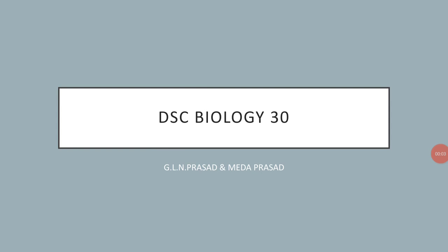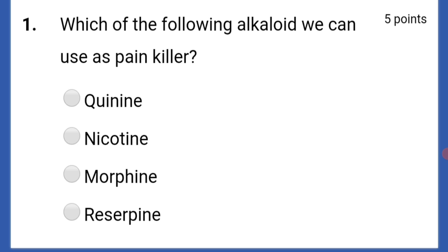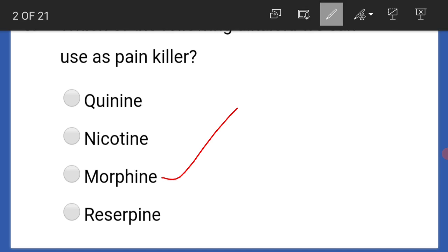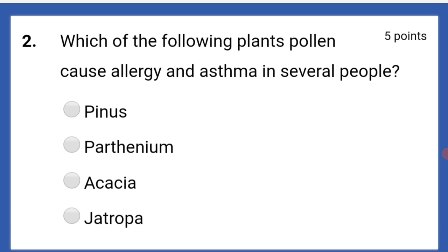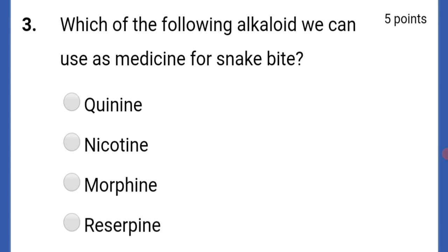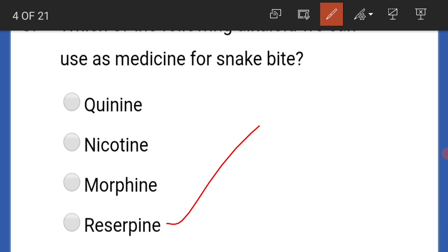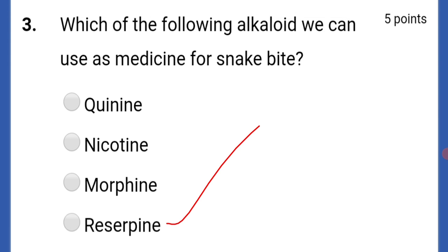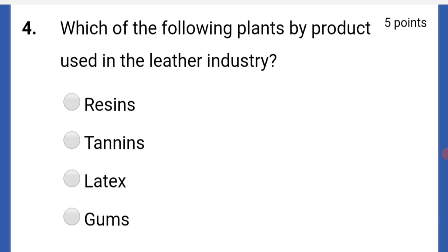Welcome to DSC Biology Part 30. Which of the following alkaloids can we use as a painkiller? That is morphine. Which of the following plants' pollen causes allergy and asthma in several people? That is parthenium. Which of the following alkaloids can we use as medicine for snake bite? That is reserpine.